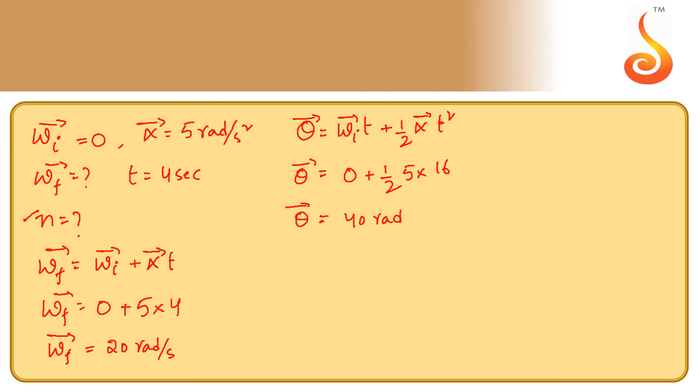Since we need to calculate number of revolutions, the total angular displacement made is 40 radians. In one revolution it would make 2π radians. Therefore, number of revolutions is equal to 40 by 2π, which is 20 by π revolutions.